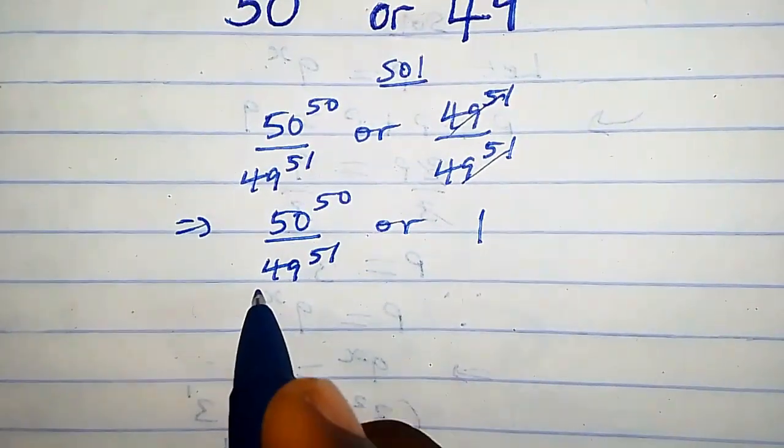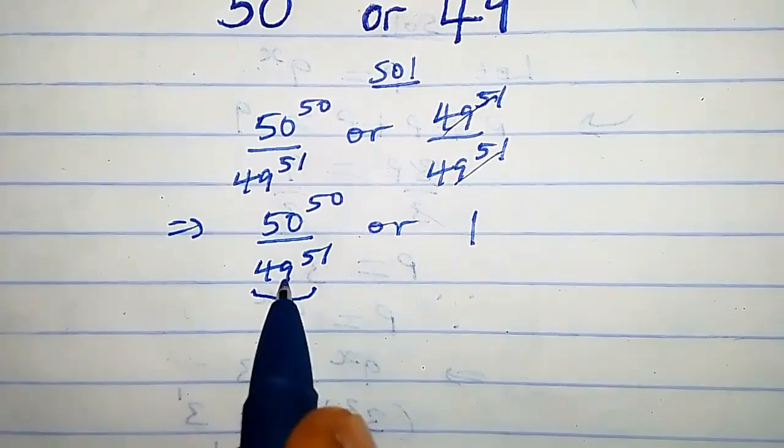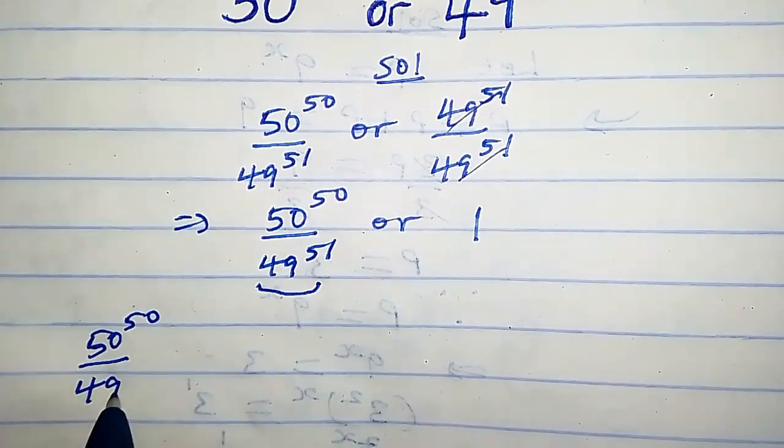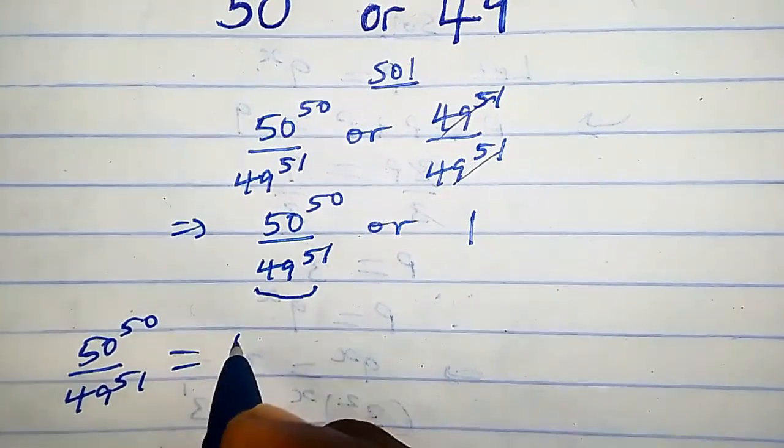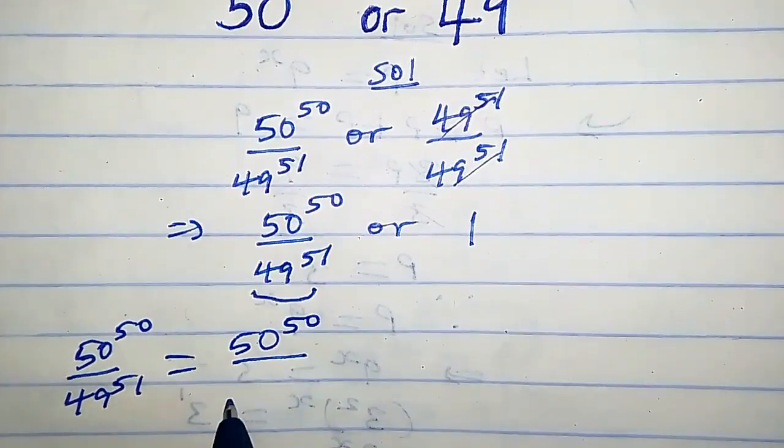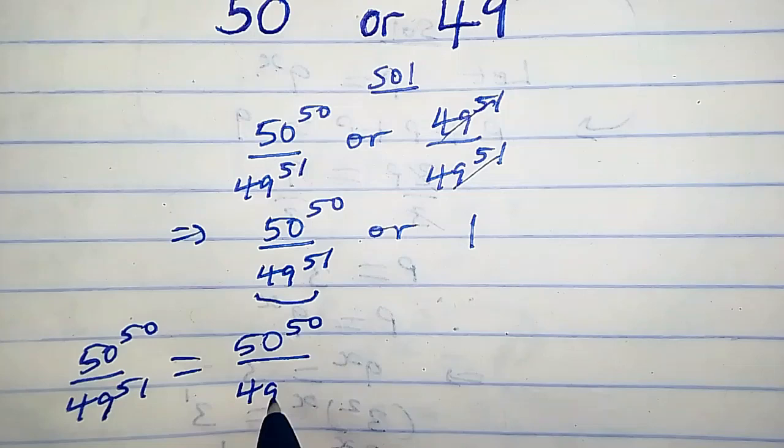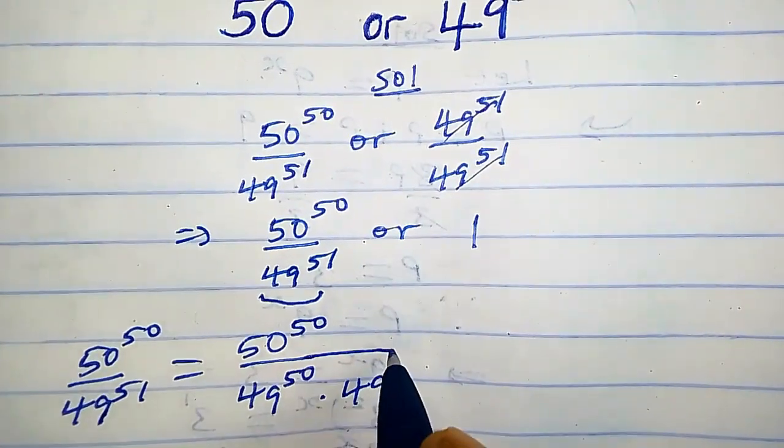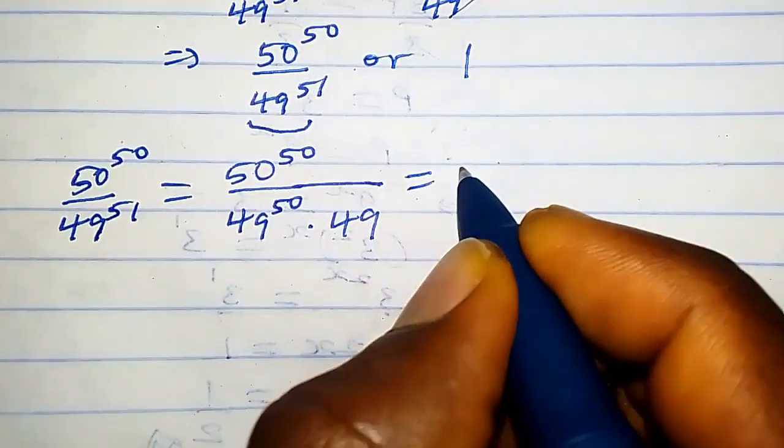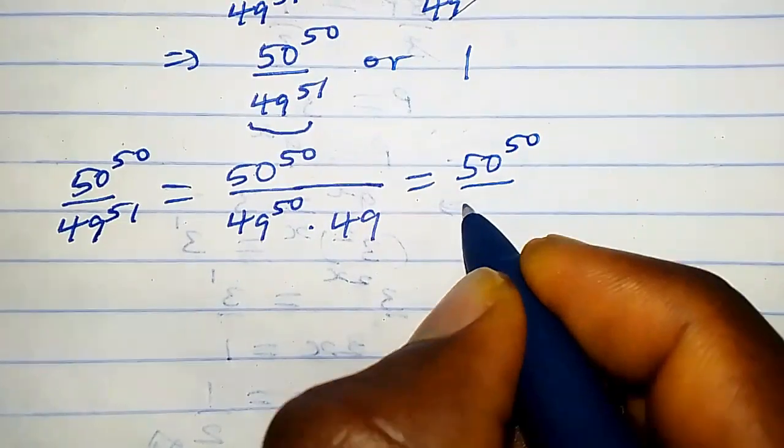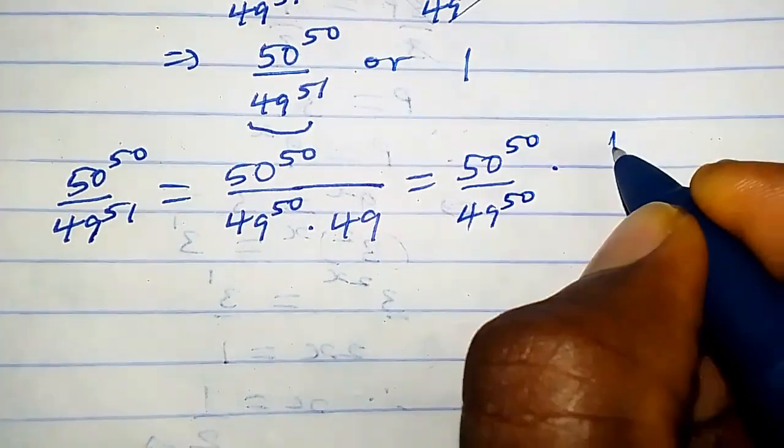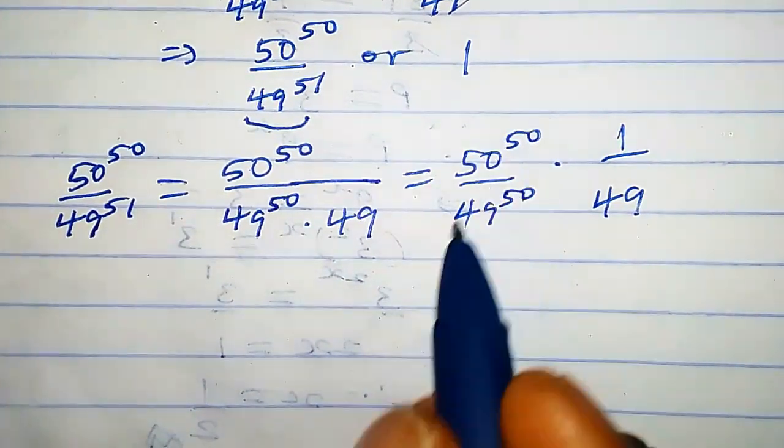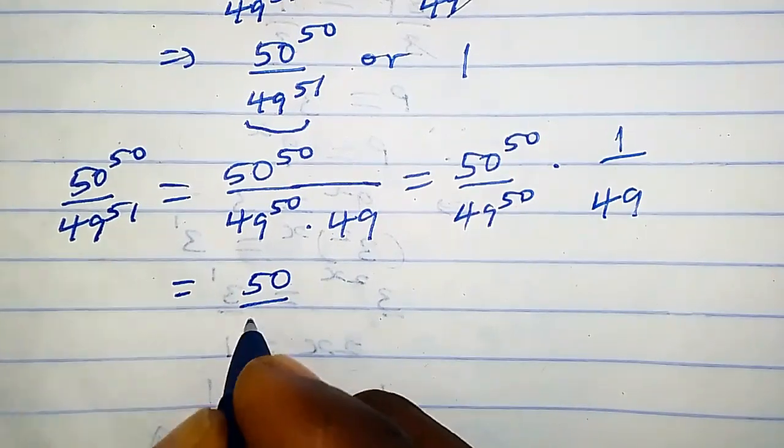Now let's consider this. We have 50 raised power 50 over 49 raised power 51. This could be written as 50 raised power 50 over 49 raised power 50 times 49, which also could be written as 50 raised power 50 over 49 raised power 50 times 1 over 49. You will observe that the power here is the same, so we can pull it out. We're going to have 50 over 49 to the power 50 times 1 over 49.